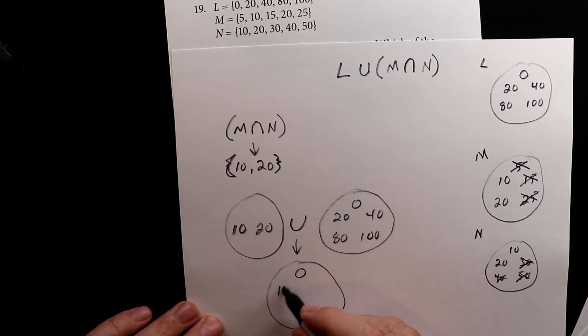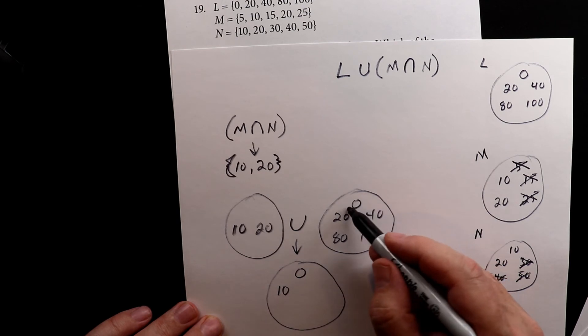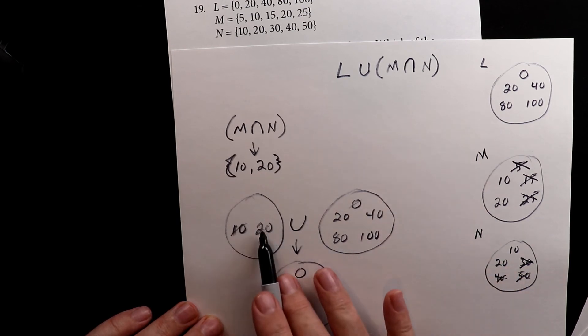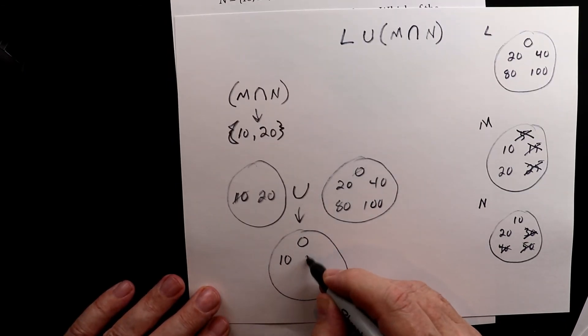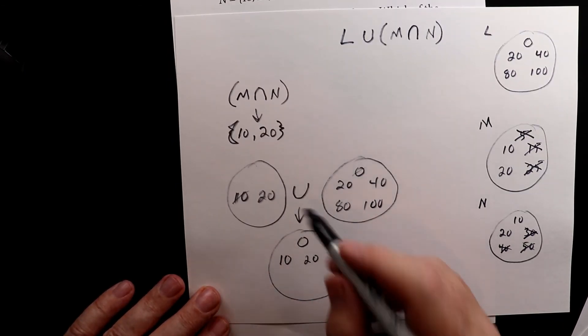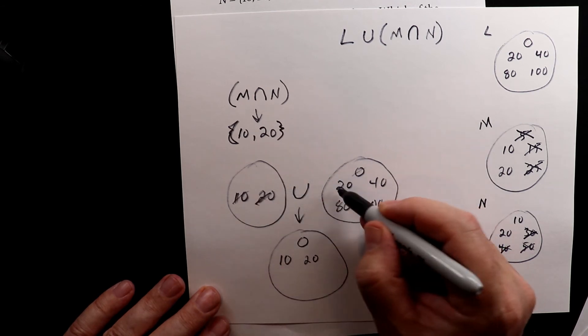So I'll just cross these off as I go. Now I noticed that there's a 20 in both of these. I don't need to write 20 twice. So all I do is I write 20 and then I cross them off so I don't get confused.